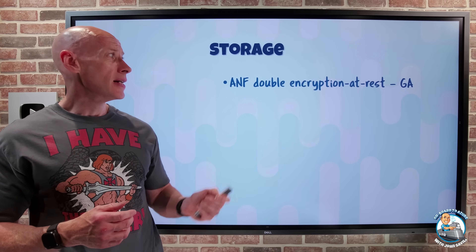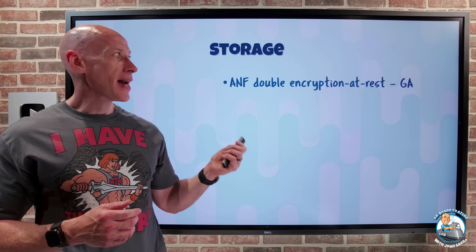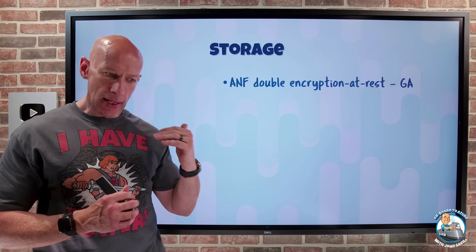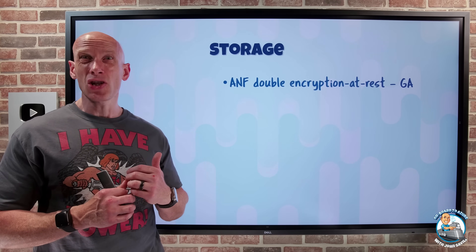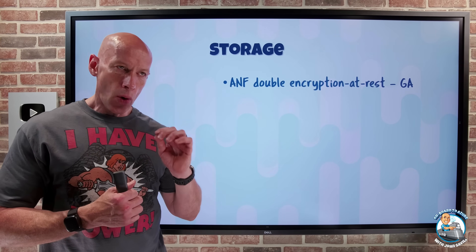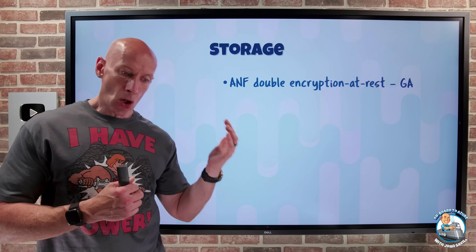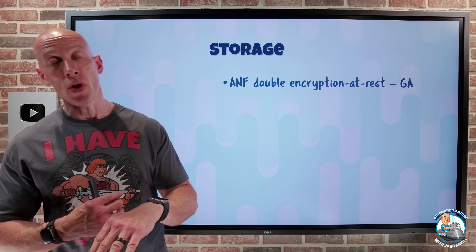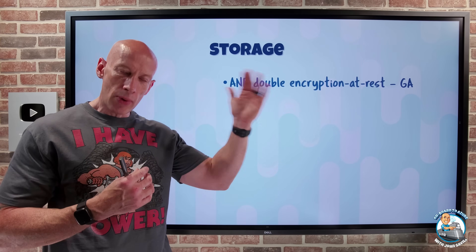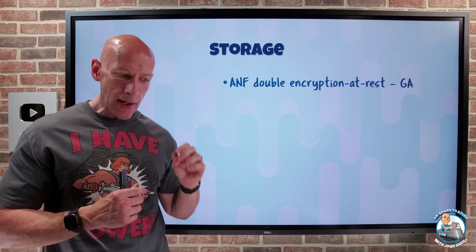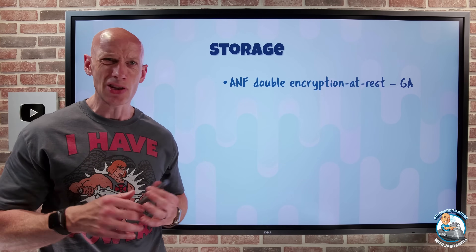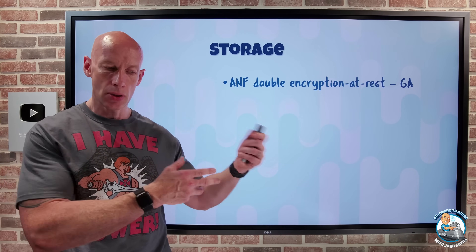On the storage side, Azure NetApp Files now has double encryption at rest in GA — multiple independent encryption layers. This gives additional protection beyond a single encryption layer. Think about scenarios like a compromised encryption key, a misconfiguration, or a bug in a cryptographic capability. Now I've got dual sets. I set it when I create the capacity pool, I can use my own encryption keys, and it has very minimal performance impact.